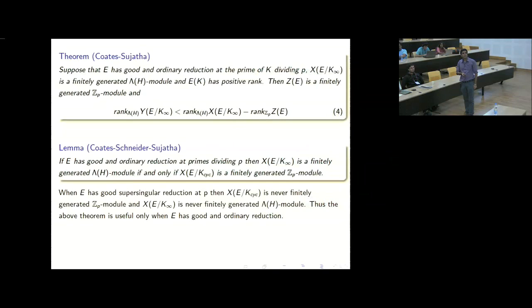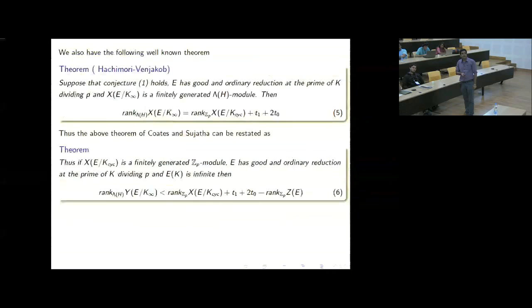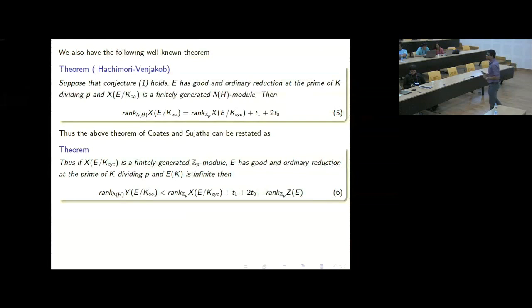This is all about the ordinary case and Kummer extensions. Now, if you want to prove the same result for the supersingular case — take an elliptic curve with supersingular reduction at a prime dividing P — the problem is that the Selmer group over the cyclotomic extension is never a finitely generated Z_P module. In particular, it is also never a finitely generated Z_P·H module over these large p-adic Lie extensions, so those statements do not even make sense in the supersingular situation.